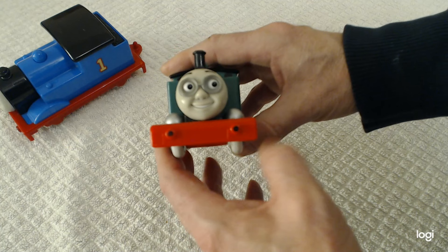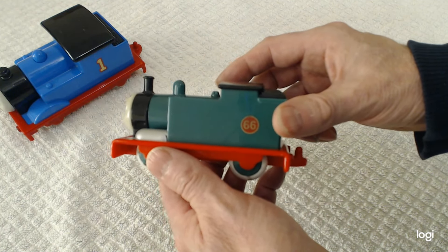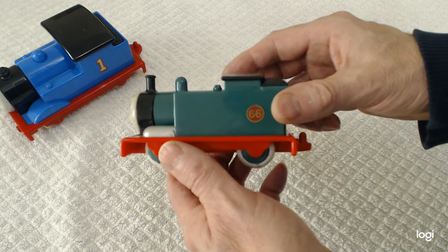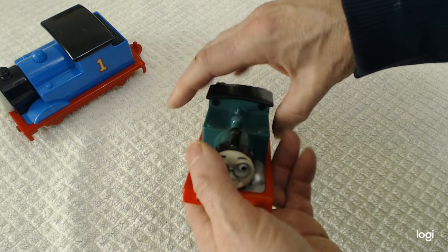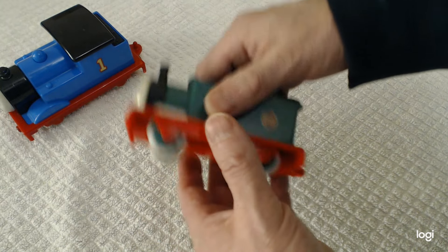Now Whiff comes in two versions. This is a standard non-talking version which is absolutely great for young children because it's light, it's small and it's very easy to hold.